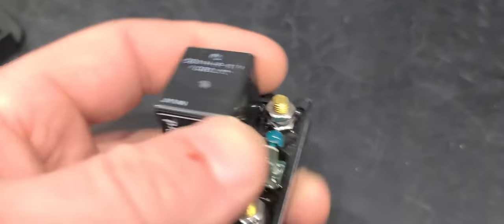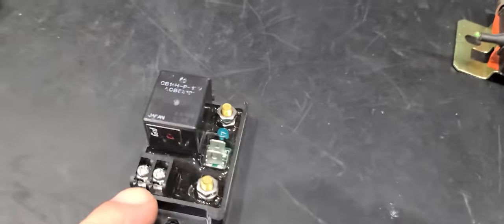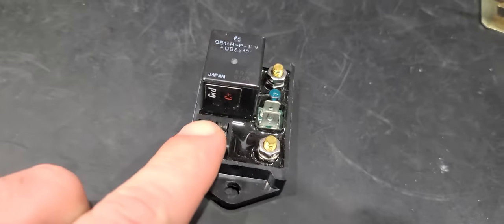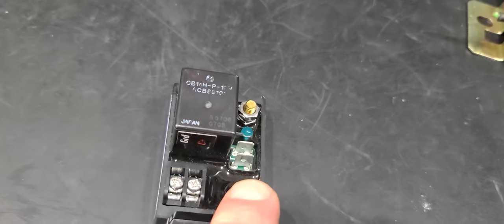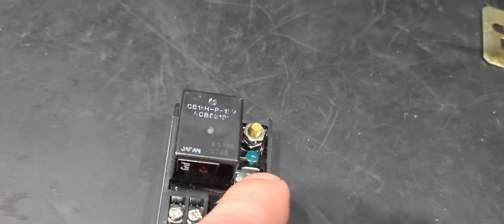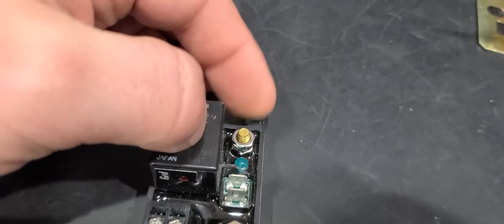What most people do is they'll take a small 22 gauge wire and jump from C plus over to the in. So when this relay closes and activates, it's passing power through this terminal through this fuse through that little LED to let you know it's on, and then out to your device.